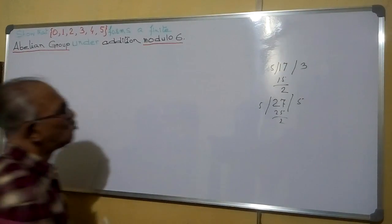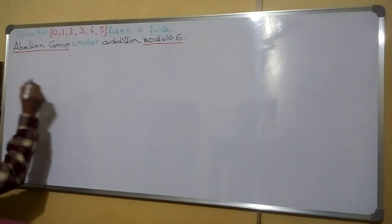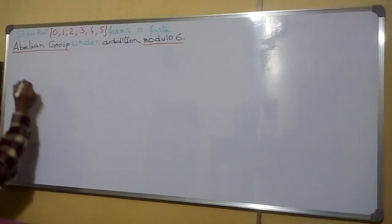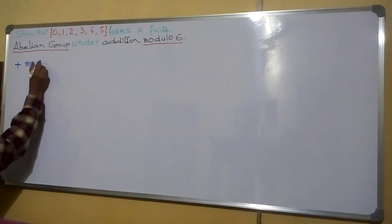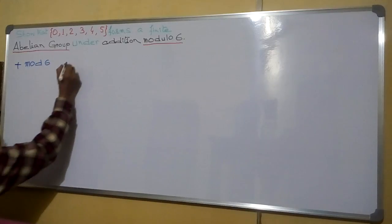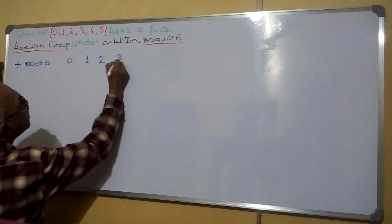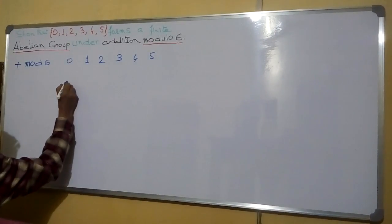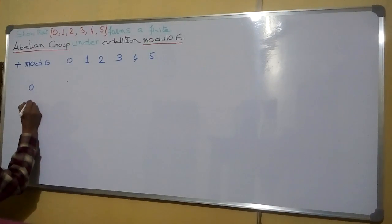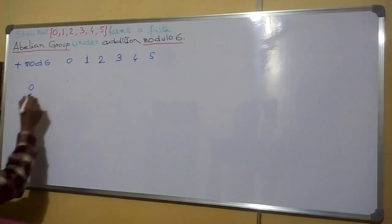So in this way, we have to apply this operation. Now let us come to the given problem. We will form a composition table for addition modulo 6 — written as plus modulo 6. The numbers are 0, 1, 2, 3, 4, 5 along both rows and columns.